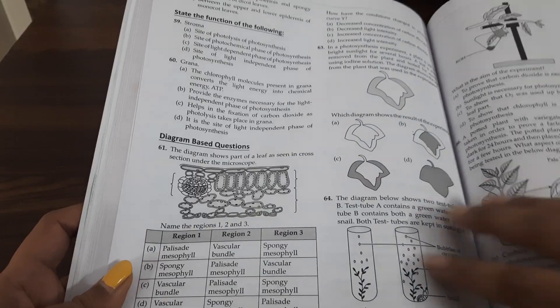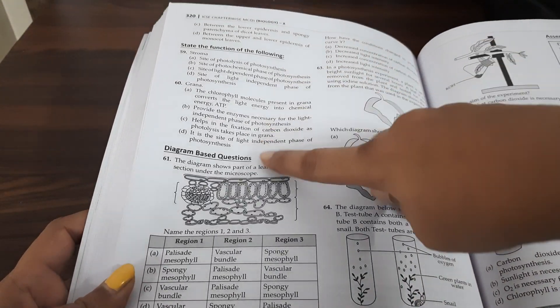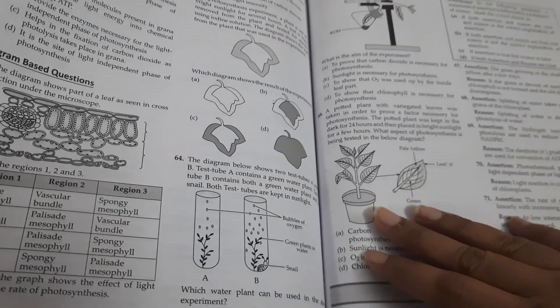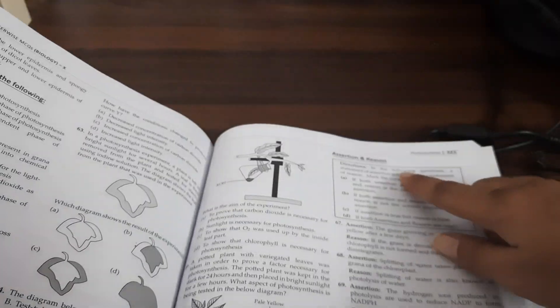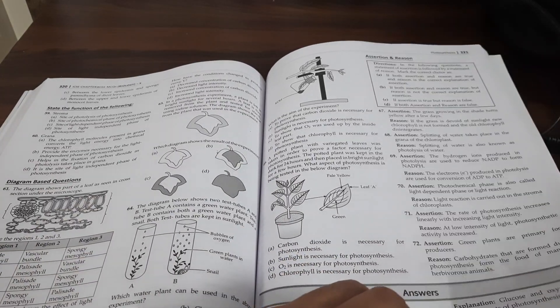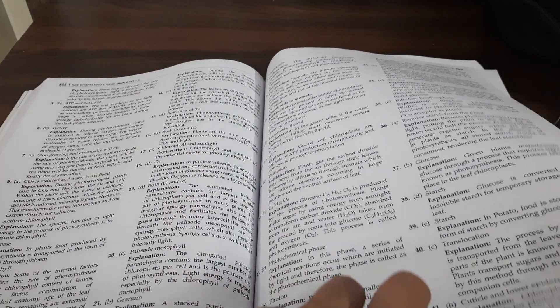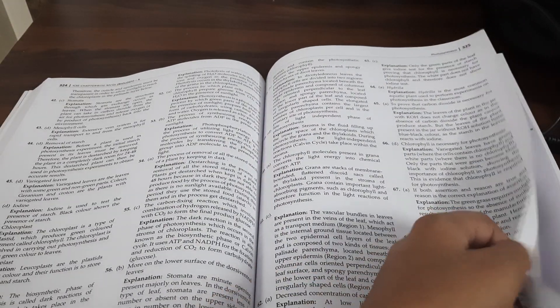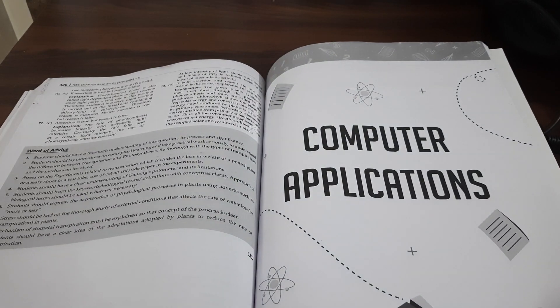Then, they have given state the function of the following type of questions. Diagram based questions are there. And then, again, assertion and reason based questions are there. And then, all the answers are explained. They have just not given the location, but they have explained each and every answer so properly. You can see so many questions and so much explanation is there.